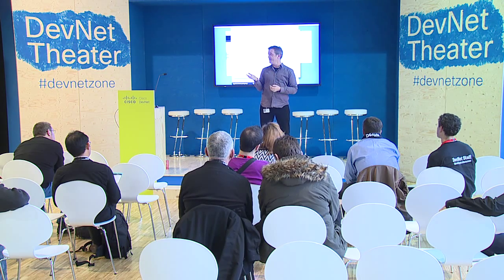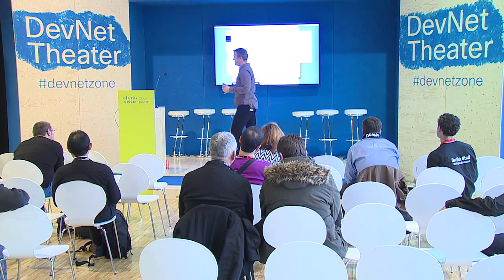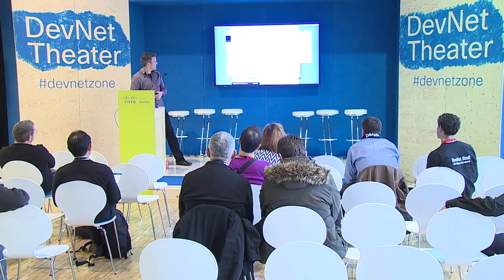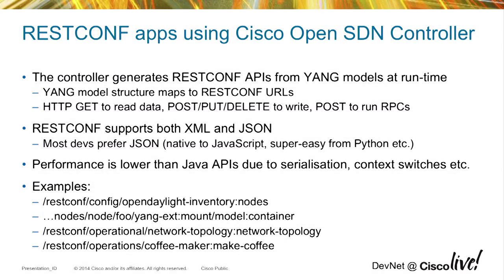We've actually built a tutorial on going through the Cisco OpenSDN controller. One of the APIs is an example of doing an RPC from REST - you'll see a coffee maker make coffee. It's basically a learning lab where you end up with a virtual coffee machine and making coffee with an RPC. Worth going through.